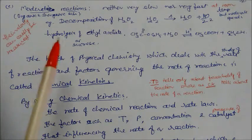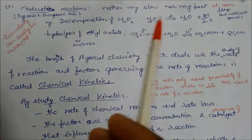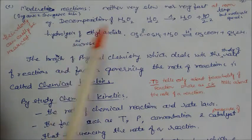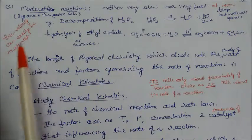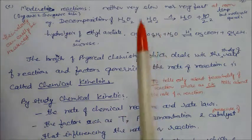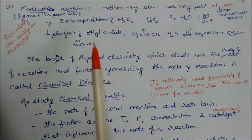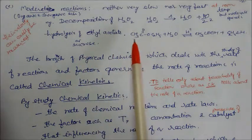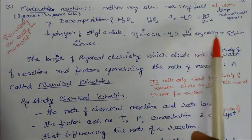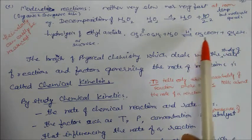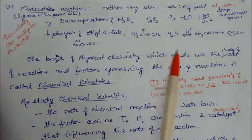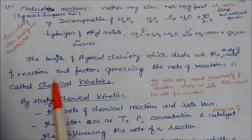Moderate reactions are neither very slow nor very fast. These reactions occur at room temperature with moderate speeds, so their velocity can easily be measured. For example, decomposition of hydrogen peroxide — if you apply heat, it converts into water and oxygen. Similarly, hydrolysis of ethyl acetate and inversion of sucrose (sugar) are moderate reactions. Hydrolysis of ethyl acetate in presence of an acid converts it to acetic acid and ethanol. These reactions can be measured, whereas slow and fast reactions are very difficult to measure.